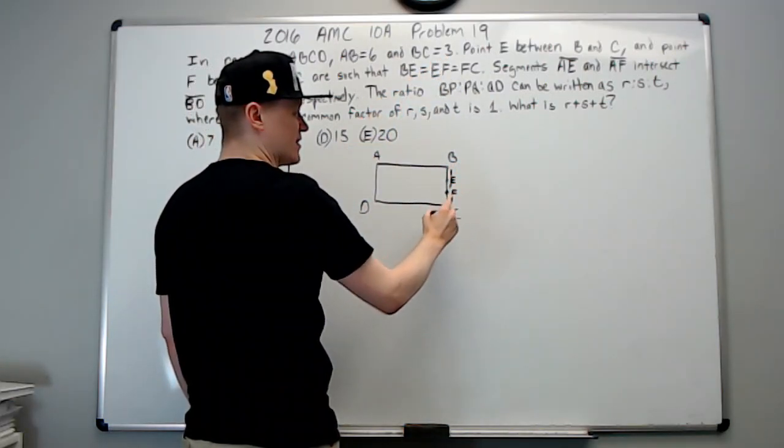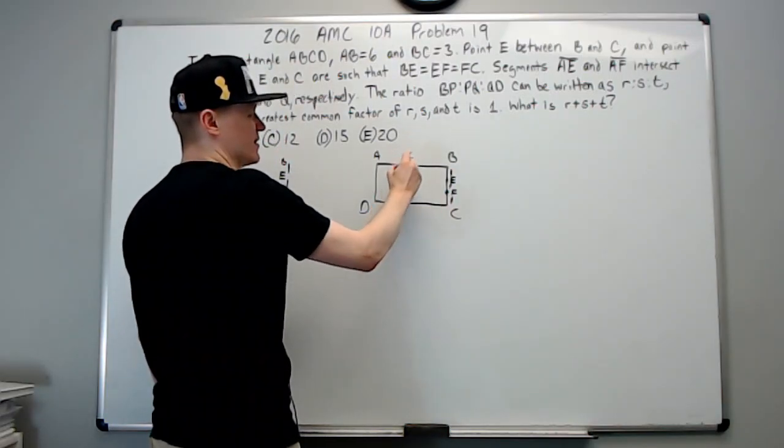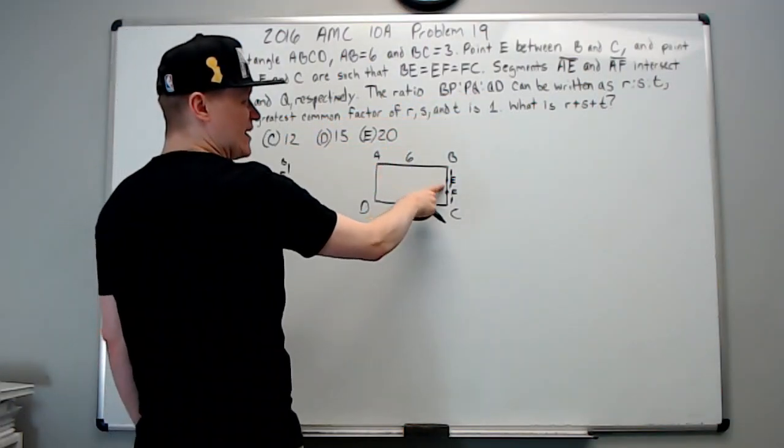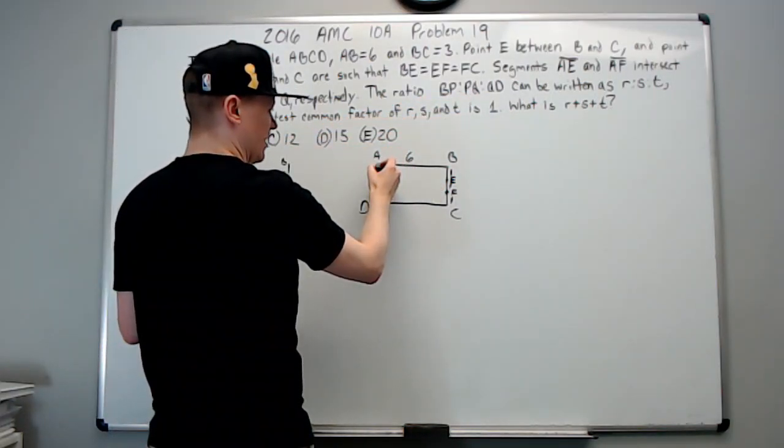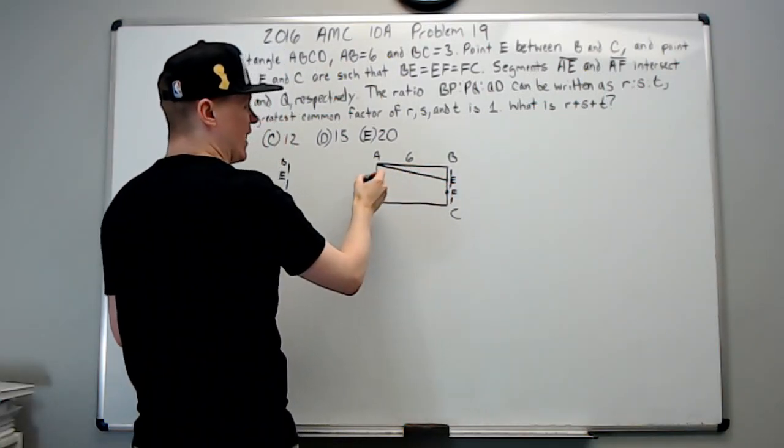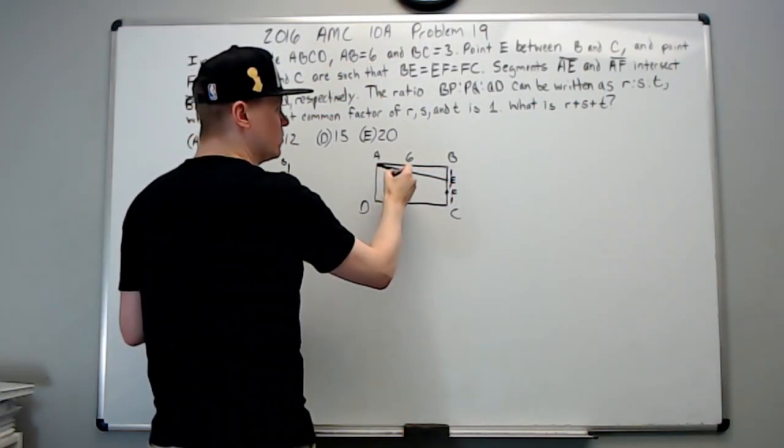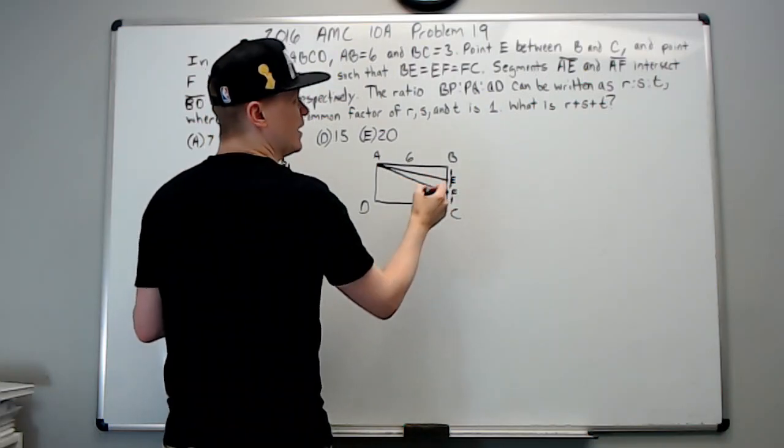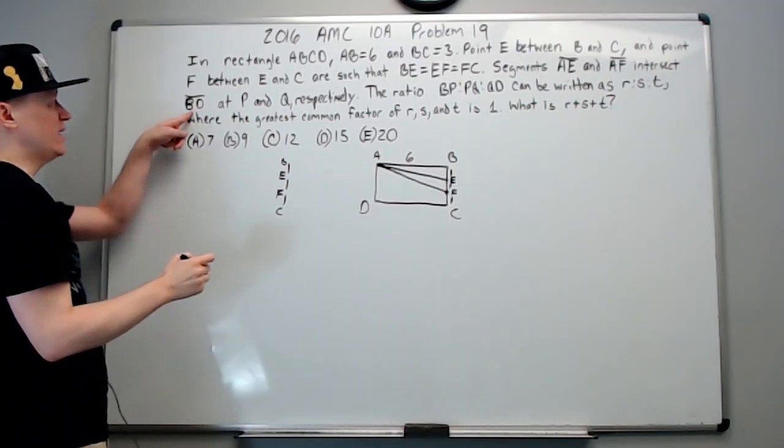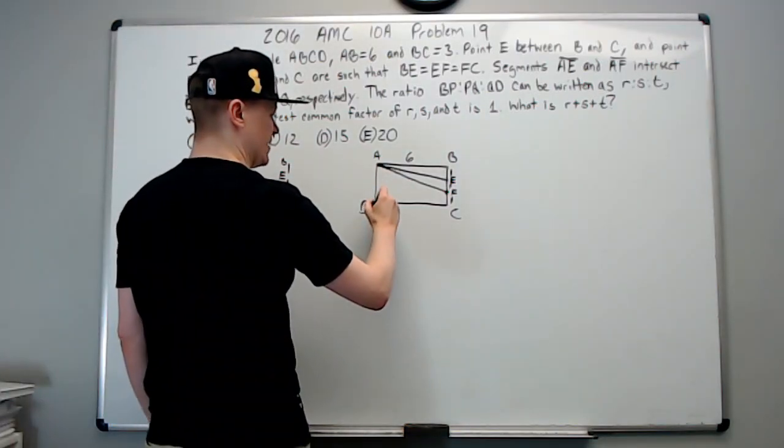And again this is six up here. All right, segments AE, which we draw, and AF intersect BD at P and Q respectively. So let's draw BD.